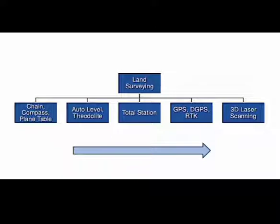Aerial photogrammetry is a part of remote sensing. Remote sensing is the process of acquiring information about a particular area or object without coming into contact with that object or area. In aerial photogrammetry we do the same thing — acquiring information without contact — but here we use photographs, and by analyzing those photographs we get the required information. That is how photogrammetry is related to remote sensing.